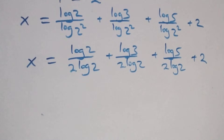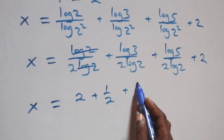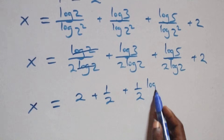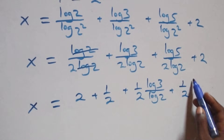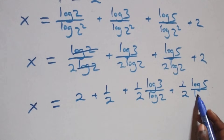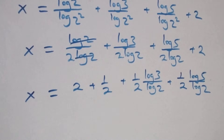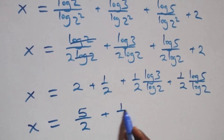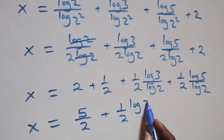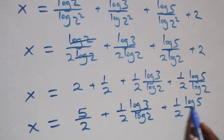The log 2 terms cancel, giving 1 over 2 in each fraction. We have x equals 2 plus 1 over 2 plus 1 over 2 times log 3 over log 2 plus 1 over 2 times log 5 over log 2. That is, x equals 5 over 2 plus 1 over 2 log 3 over log 2 plus 1 over 2 times log 5 over log 2.